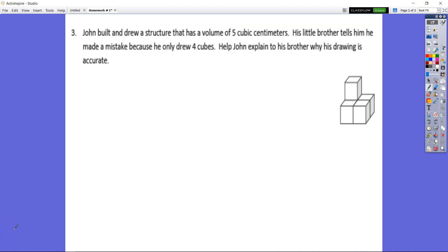Okay. Looking at number three here, it says John built and drew a structure that has a volume of five cubic centimeters. His little brother tells him he made a mistake because he only drew four cubes. So he has five cubic centimeters, but he only drew four cubes. So help John explain to his little brother why his drawing is accurate. Accurate means it's right for why it's correct. So why is this the right drawing?